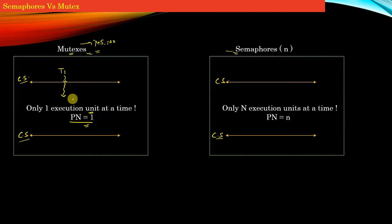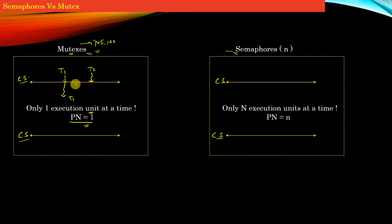So if thread T1 is executing inside the critical section and thread T2 arrives and tries to enter, T2 would be blocked and would stay blocked until thread T1 exits the critical section and unlocks the mutex. So the permit number of mutex is one.